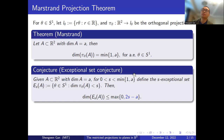More generally, we can consider a stronger version, which is known as the exceptional set conjecture. Given a set A in R2 with dimension A, and a parameter S less than the minimum of 1 and A, we define the S-exceptional set to be the set of directions theta such that the Hausdorff dimension of pi_theta of A is less than S. It is conjectured that the dimension of this exceptional set is less than the maximum of 0 and 2S minus A.